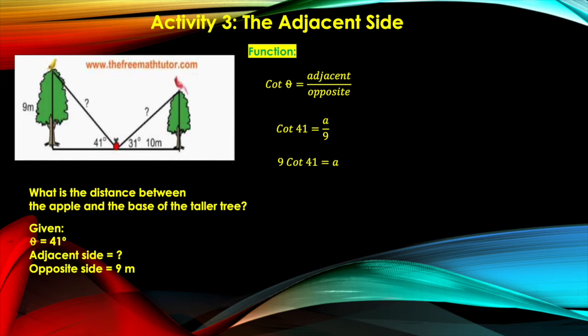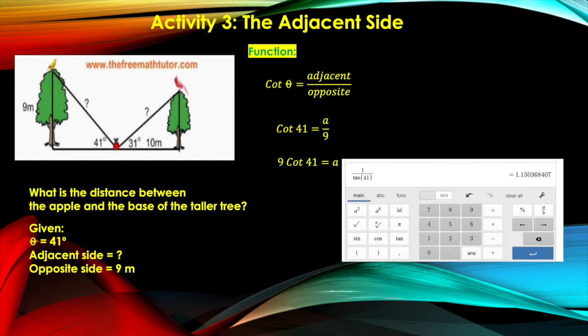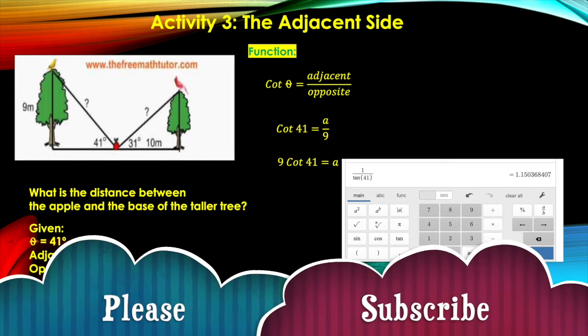Next, using the decimals calculator, which I linked in your module, we are going to determine the value of cotangent 41 degrees. So how do you put it on the calculator? If you have noticed on the decimal scientific calculator, there is no cotangent function. But because we know that a cotangent function is the inverse of tangent function, we're going to use the tangent here.